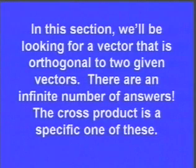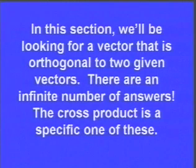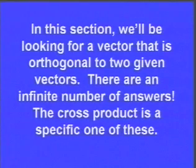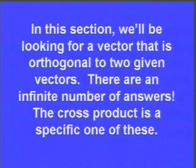It's because we didn't mention how long that vector was. The one coming out of the screen could be any length — one unit long, two units long, pi units long. There's an infinite number of lengths, therefore an infinite number of answers. The one going behind the screen is just the negative of the one coming out. Since there are an infinite number of answers, we're just going to be looking for a specific one, and it's going to be called the cross product.